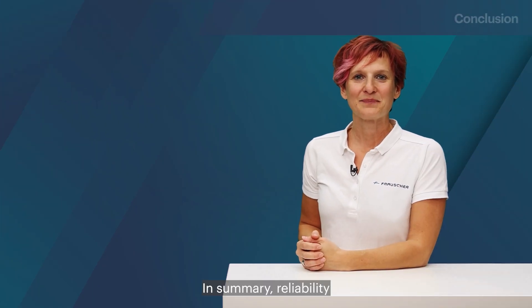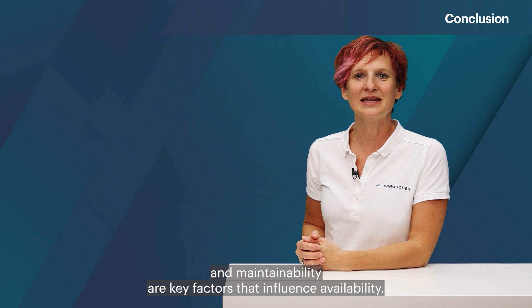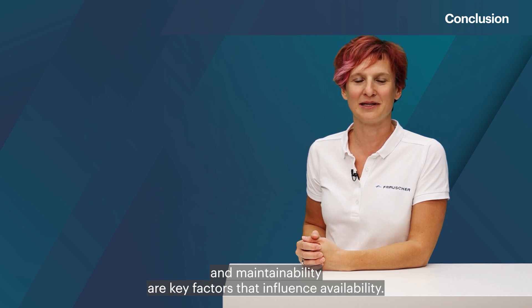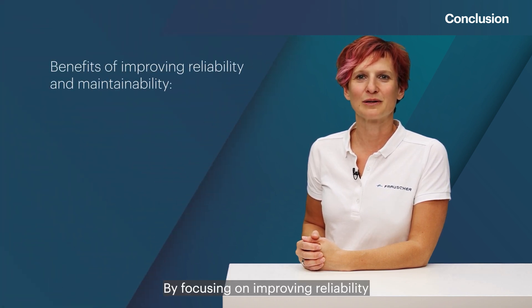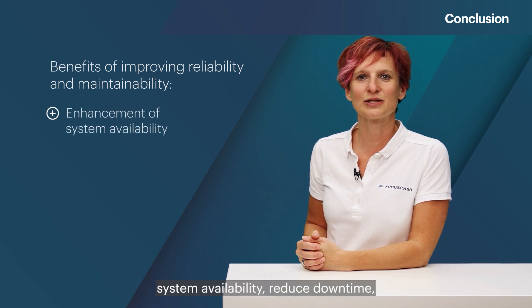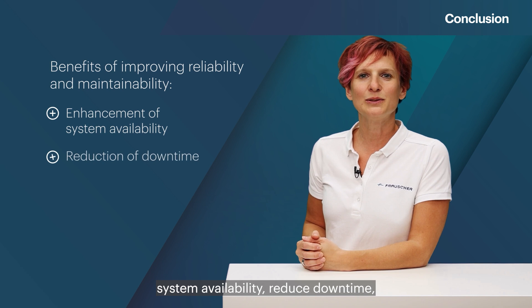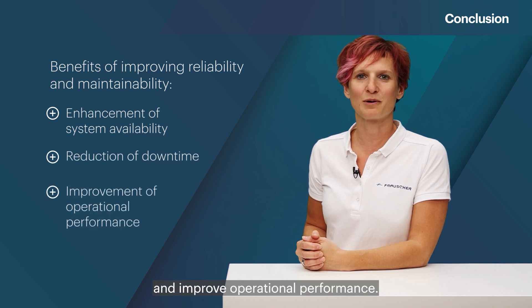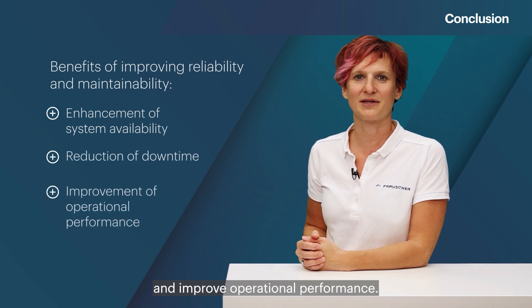In summary, reliability and maintainability are key factors that influence availability. By focusing on improving reliability and maintainability, organizations can enhance system availability, reduce downtime and improve operational performance.